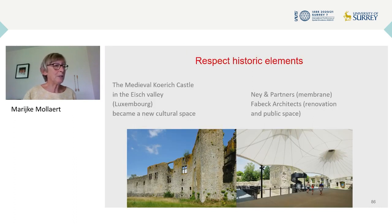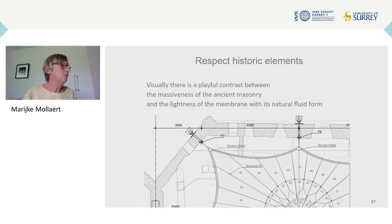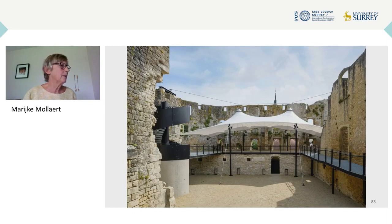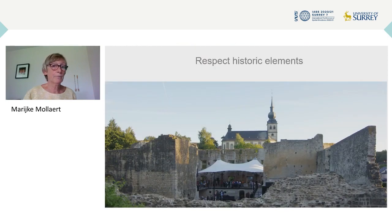Another aspect is to give value to the historic elements. The medieval Curric Castle in the Aish Valley became a new cultural space. Visually there is a playful contrast between the massiveness of the ancient masonry and the lightness of the membrane with its natural fluid form. The canopy is almost floating. The membrane is not at all overwhelming — it is just there where it has to be.